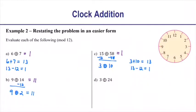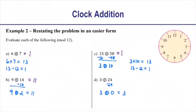That agrees with what we found using the division method. For 3 circle-plus 24: 24 is a multiple of 12, so subtracting 24 leaves us with 3 circle-plus 0, which is 3. Once you get the hang of it, you can see how much easier it is than slogging through division every time. All you care about is the remainder, and you can get that by adjusting the problem by adding and subtracting multiples of 12.